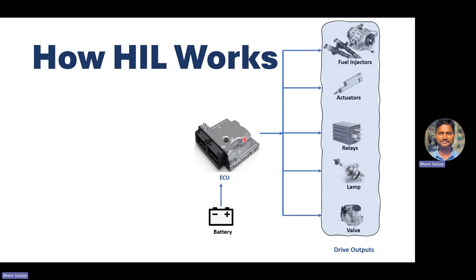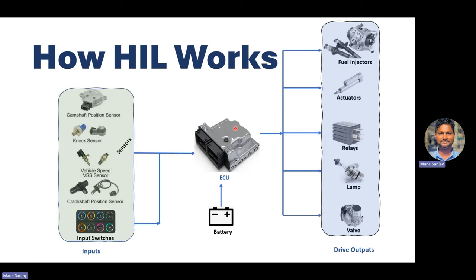The ECU drives different outputs like actuators, fuel injectors, relays, lamps, or valves. How does it drive them? Based on the algorithm written inside the ECU and the inputs. These inputs include crank position sensors, different sensor inputs that go directly to the ECU. There might also be switches like fog lamp switch, roof lamp switch, headlamp, ignition key barrel switch, crank position switch — everything goes to the ECU, which takes a decision and drives the output. That's how the ECU works in an actual vehicle.